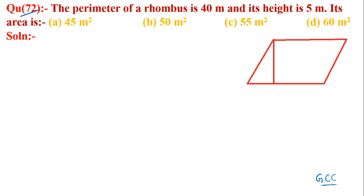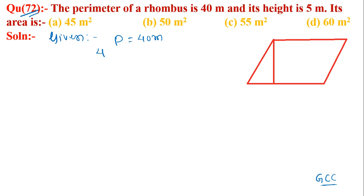Chapter area question number 72: the perimeter of a rhombus is 40 meters and its height is 5 meters, so its area is what? Given perimeter = 40 meters. The perimeter of a rhombus equals 4a, so a is equal to 40 divided by 4.